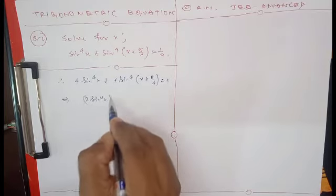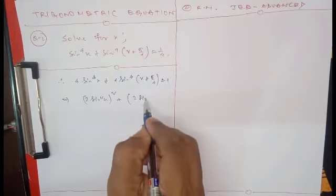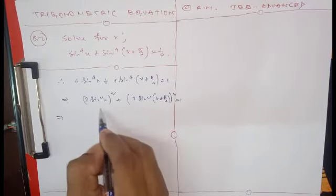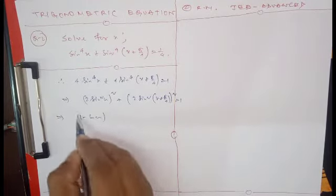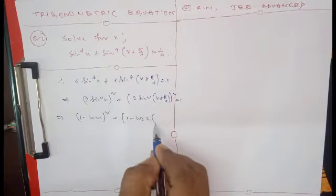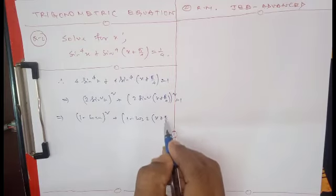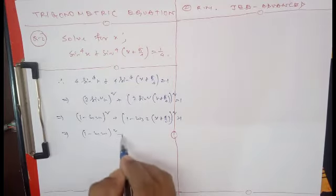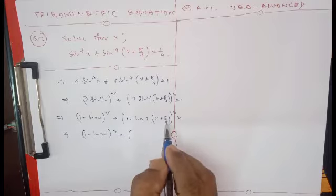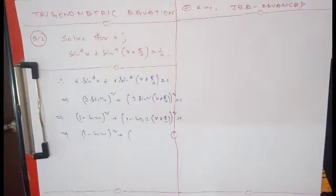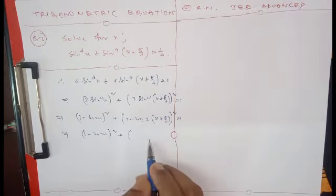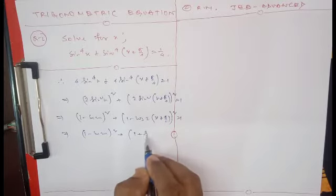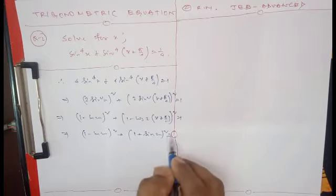We can write 4sin⁴(x) as [2sin²(x)]² = (1 - cos 2x)², and similarly 4sin⁴(x + π/4) as (1 - cos(2x + π/2))². Now cos(90° + θ) = -sin θ, so cos(2x + π/2) = -sin(2x). This gives us (1 - cos 2x)² + (1 + sin 2x)² = 1.